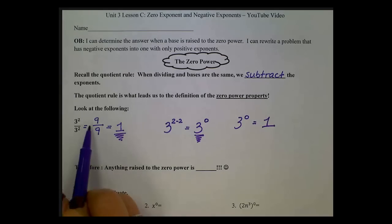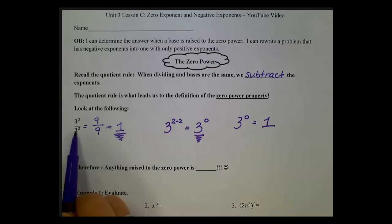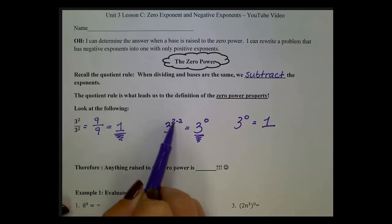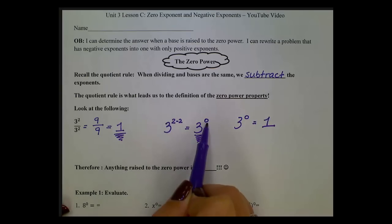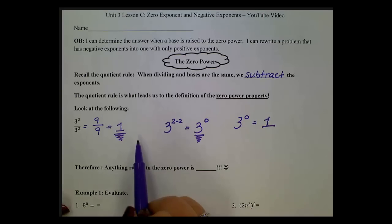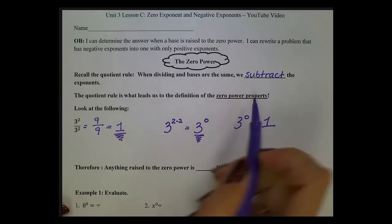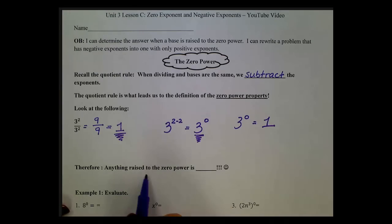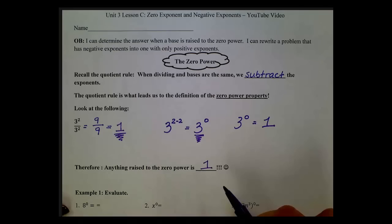Here we evaluated it out: 9 divided by 9 is 1. Using the quotient rule on the same problem, we subtract the exponents and get 3 to the 0 power. So 3 to the 0 power is 1. The zero power property tells us that anything raised to the 0 power is 1 — whether it's a number or a letter, it doesn't matter.